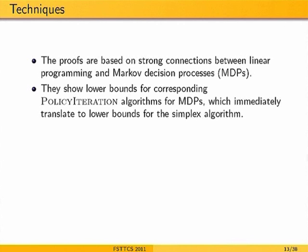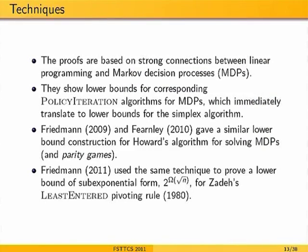The nice thing about this paper is that all previous lower bounds relied on deformations of cubes and simple polytopes. By going through Markov Decision Processes, the constructed polytopes are very complex yet still tractable to analyze. There is a well-known policy iteration algorithm for MDPs which turns out to be exactly the simplex algorithm running on a related LP. The same technique has also been applied to Zadeh's least-entered pivoting rule.